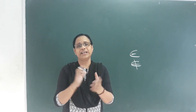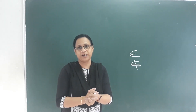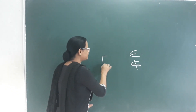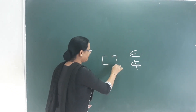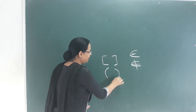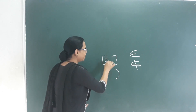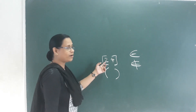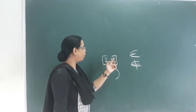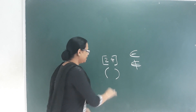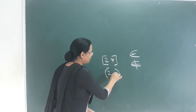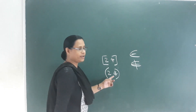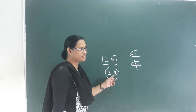What is an interval? A closed interval includes both endpoints — for example, from 2 to 4 including both 2 and 4. An open interval does not include the endpoints — from 2 to 4, not including 2 or 4.